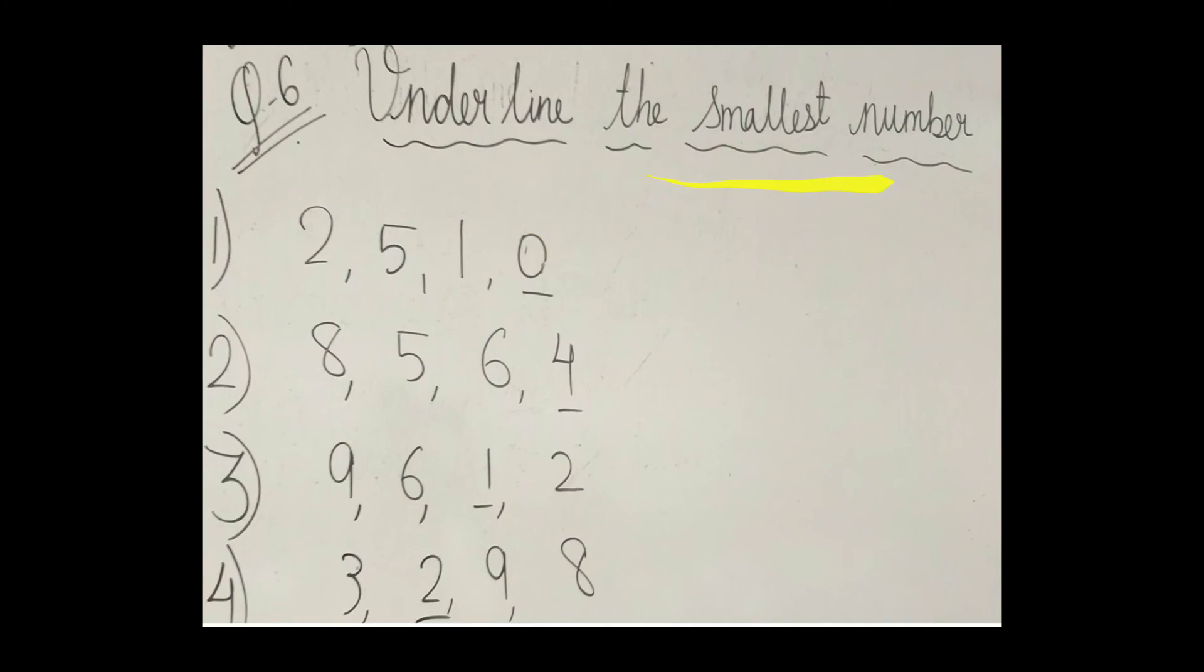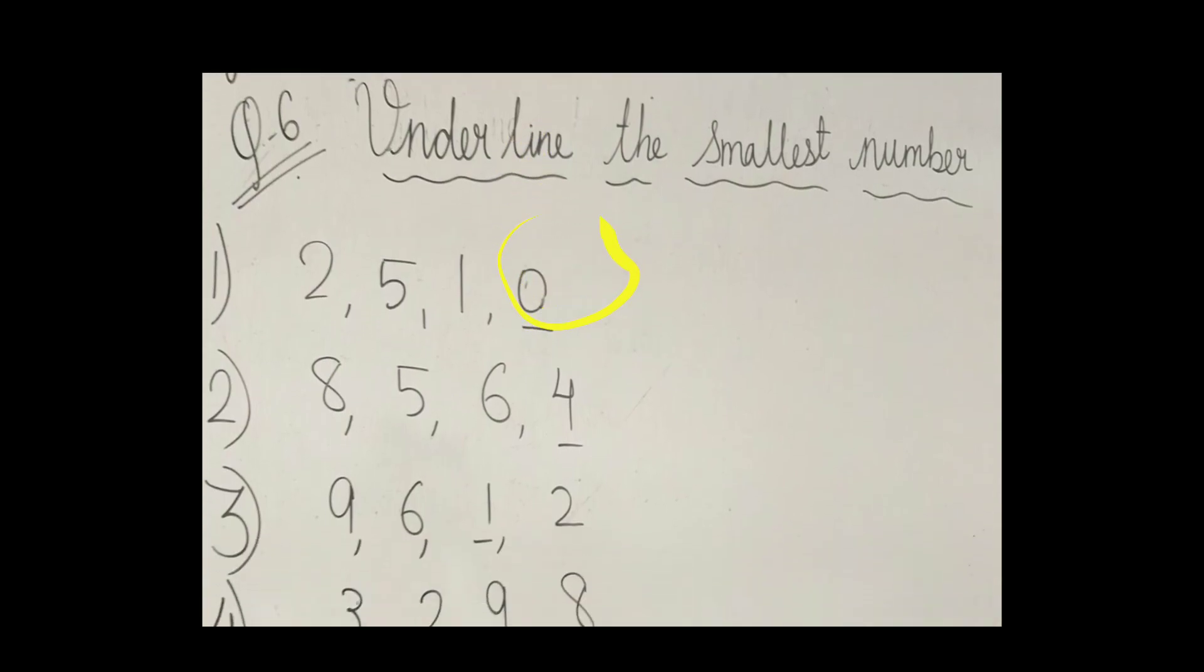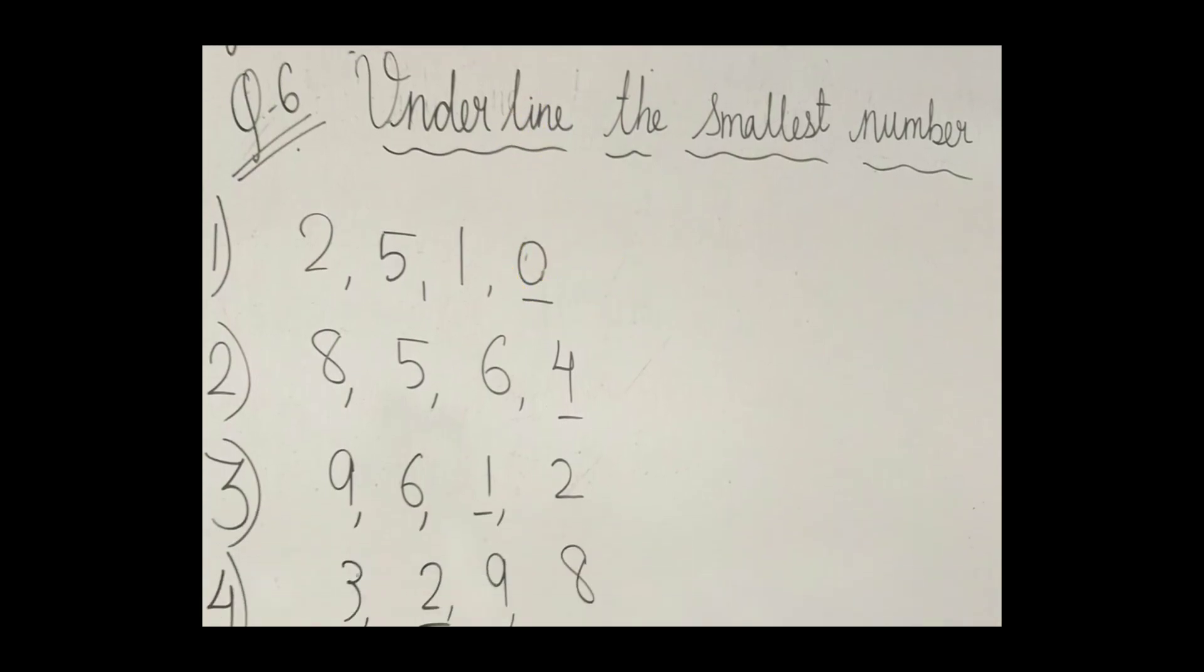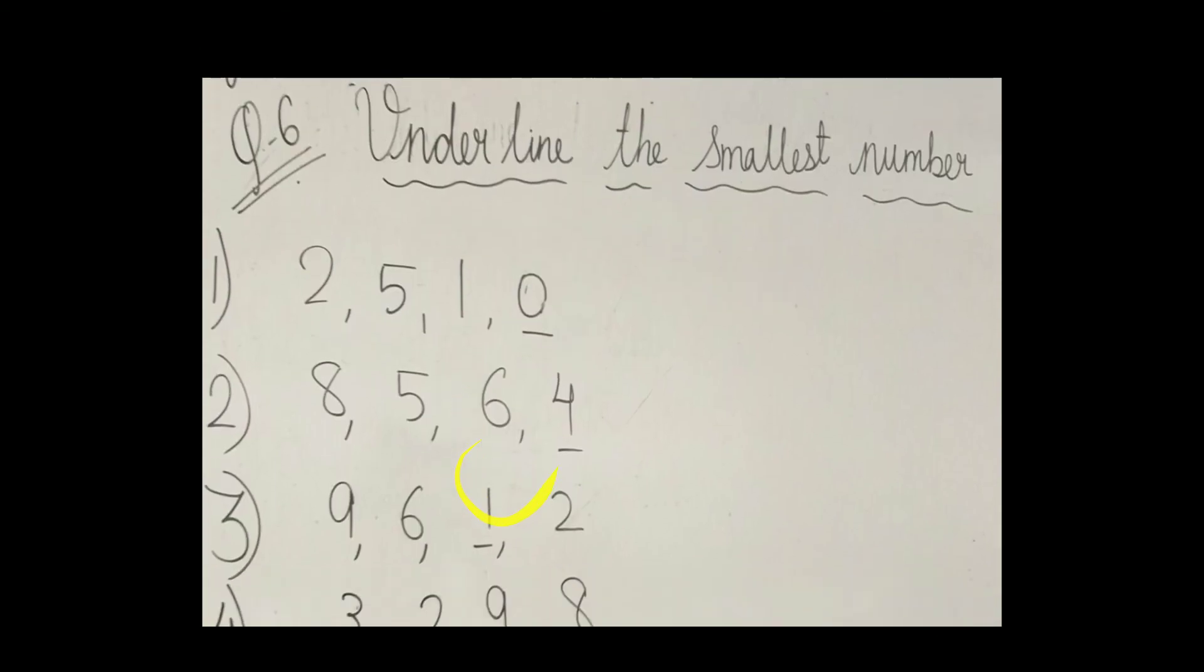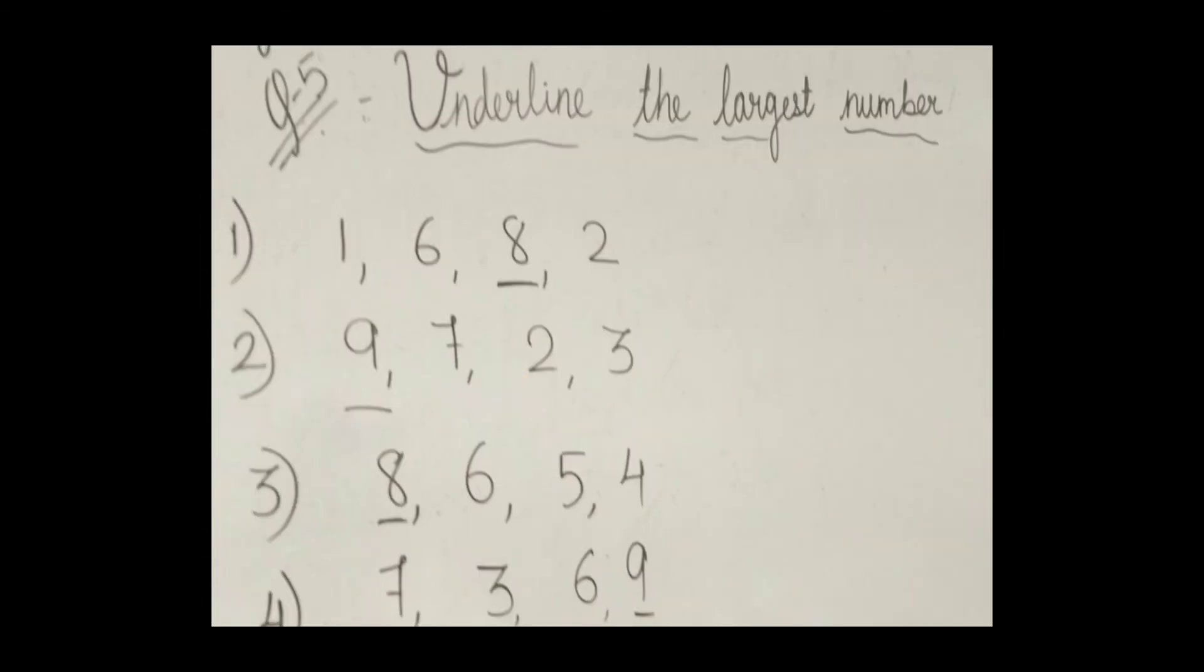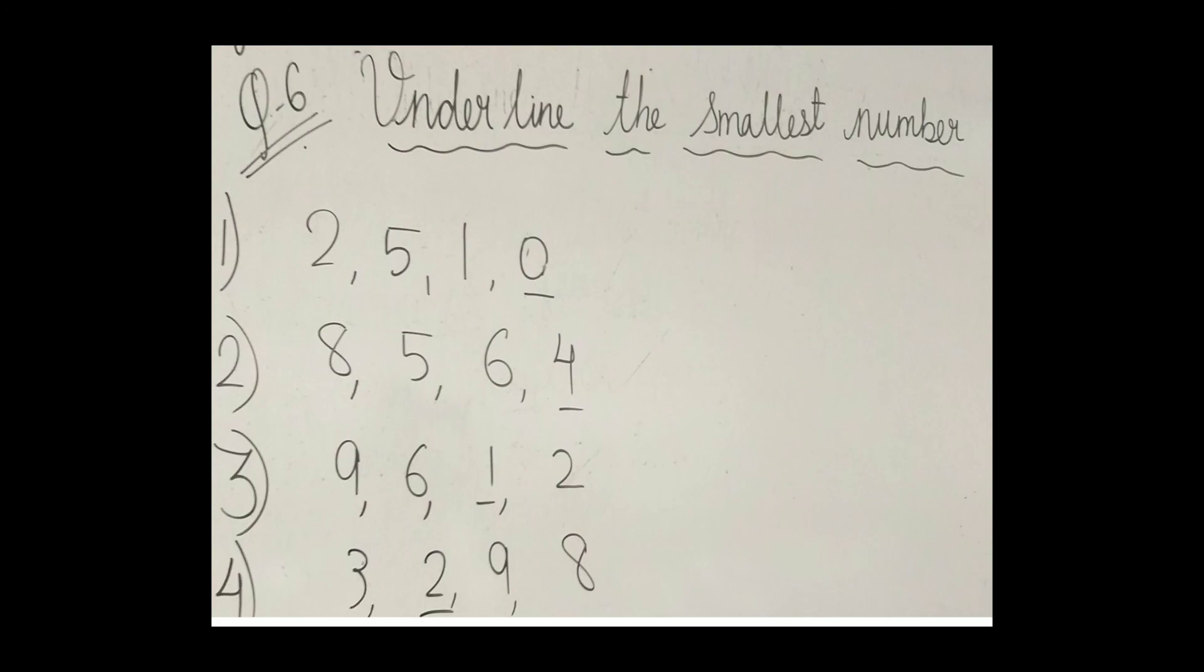Underline the smallest number. 2, 5, 1, 6. Which is the smallest number? 1. 8, 5, 6, 4. 4 is the smallest number. 9, 6, 1, 2. 1 is the smallest number. 3, 2, 9, 8. 2 is the smallest number.